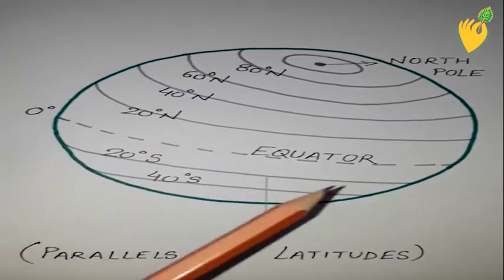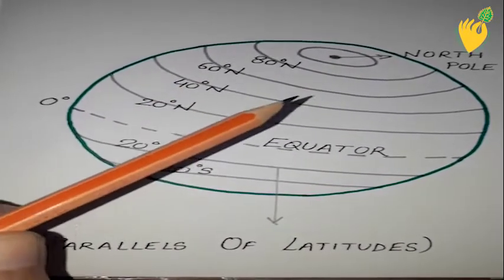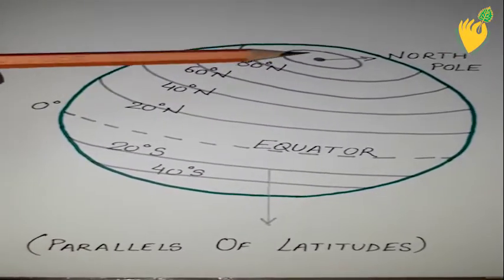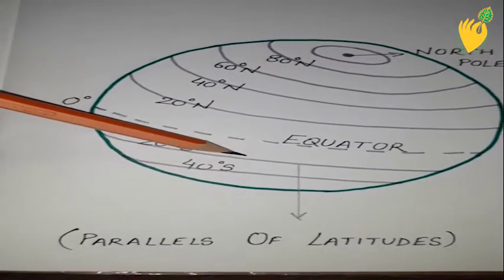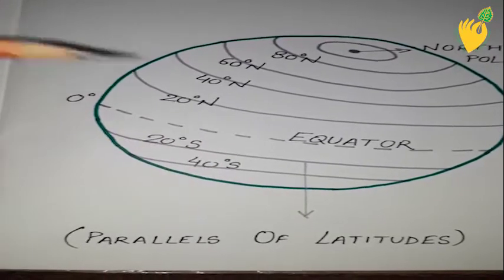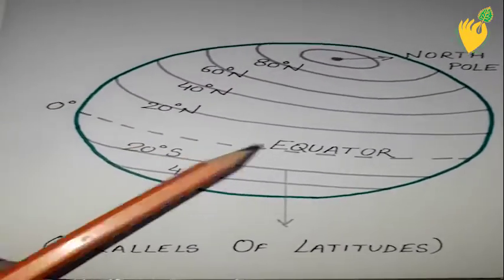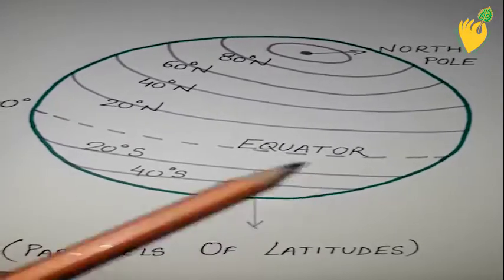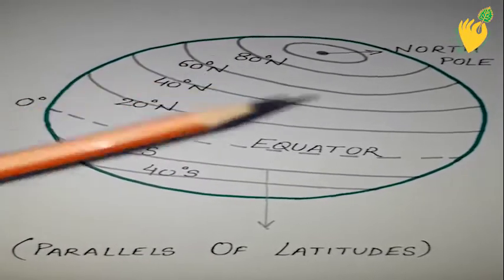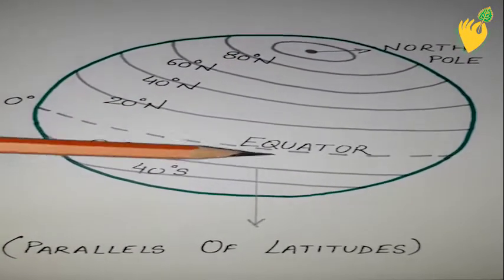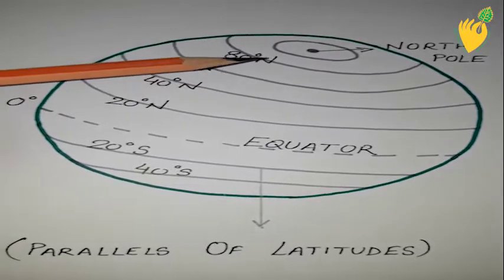The lines of latitude are parallel — they do not meet each other. They get smaller and smaller as they reach the pole, and ultimately they are confined to a point. The same is happening at the other pole. The equator is the greatest circle, and the rest of the lines get smaller in size as they reach towards the pole.